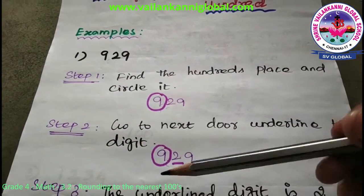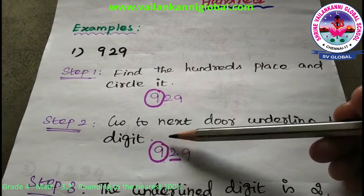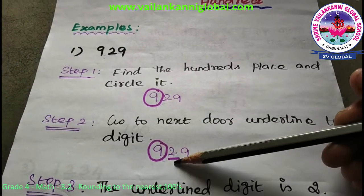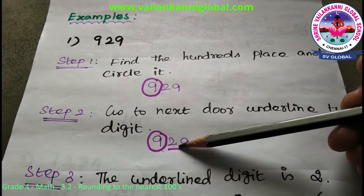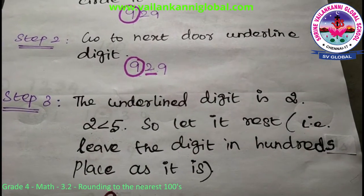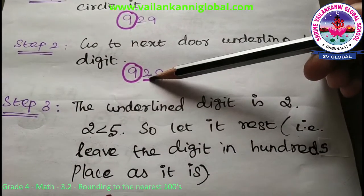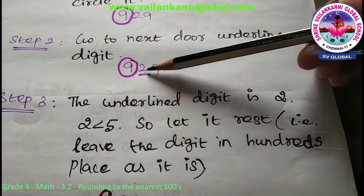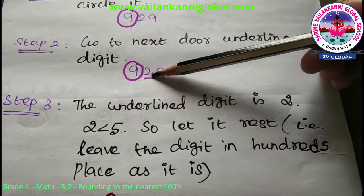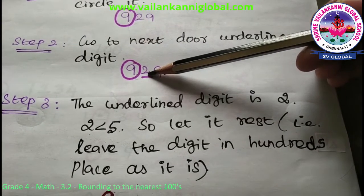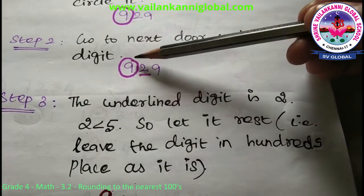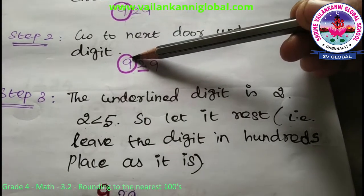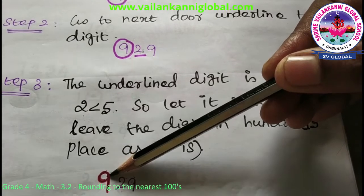Step 2 is to locate the digit to the right of the hundreds place — 2 is there, so just underline that value. Then Step 3 is to check whether this underlined value is more than 5 or less than 5. Here 2 is less than 5, so let it rest — leave the digit in the hundreds place as it is, no need to change it.